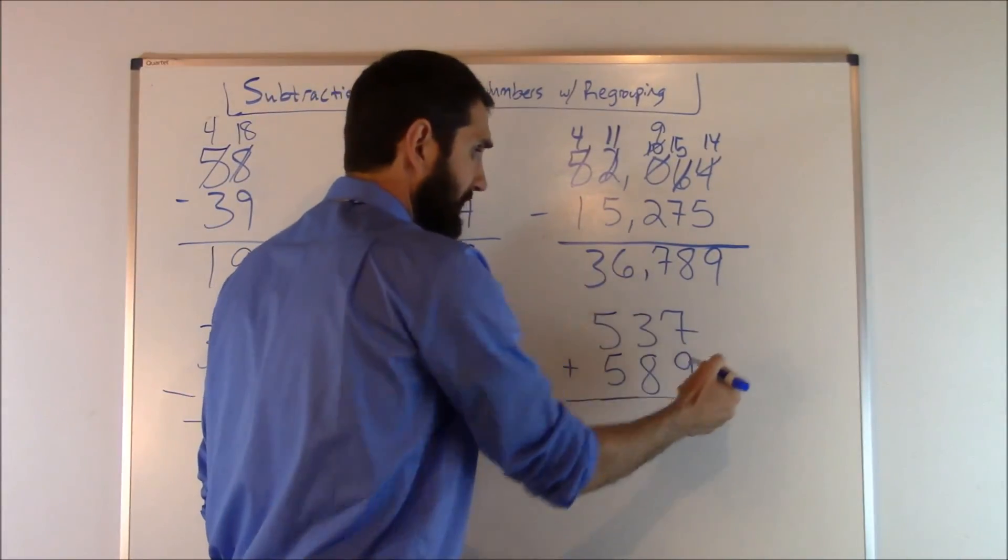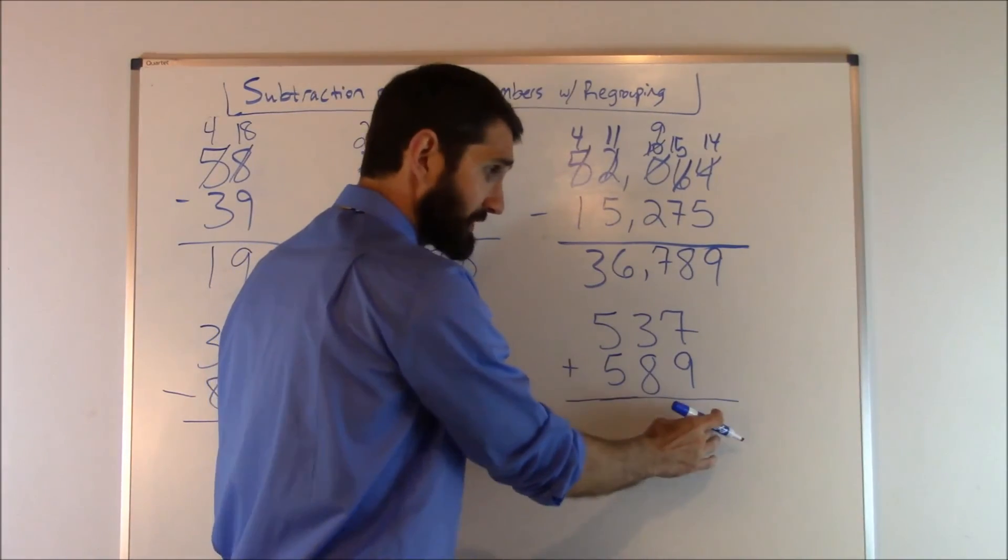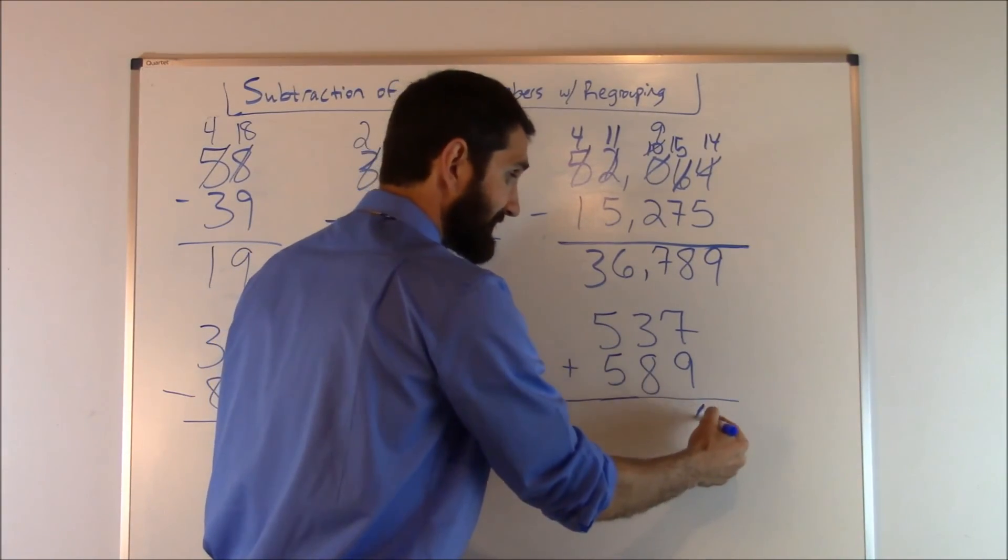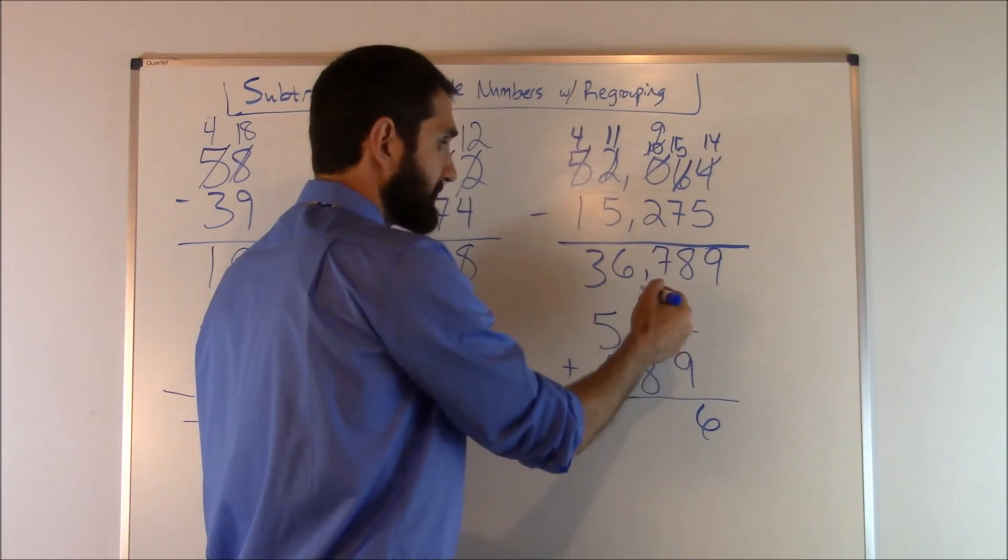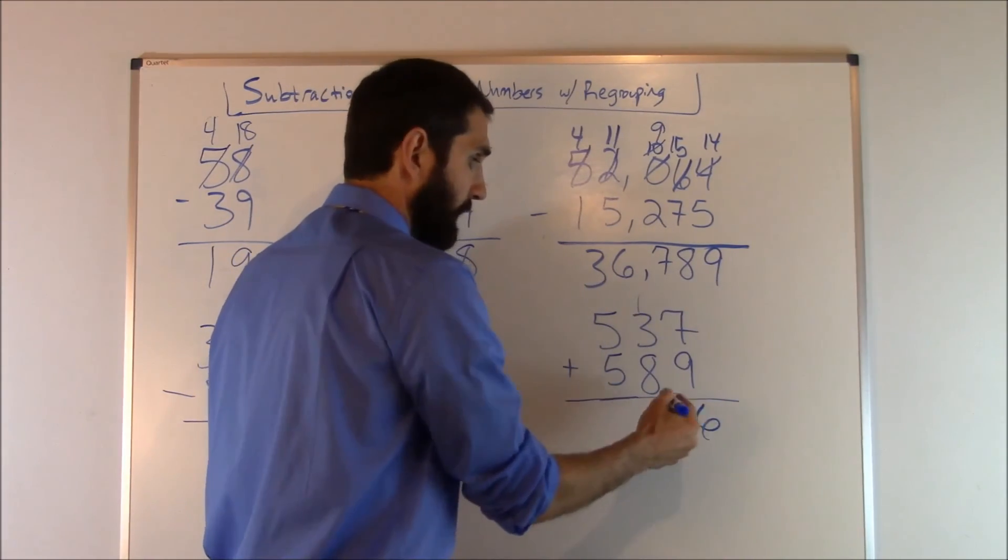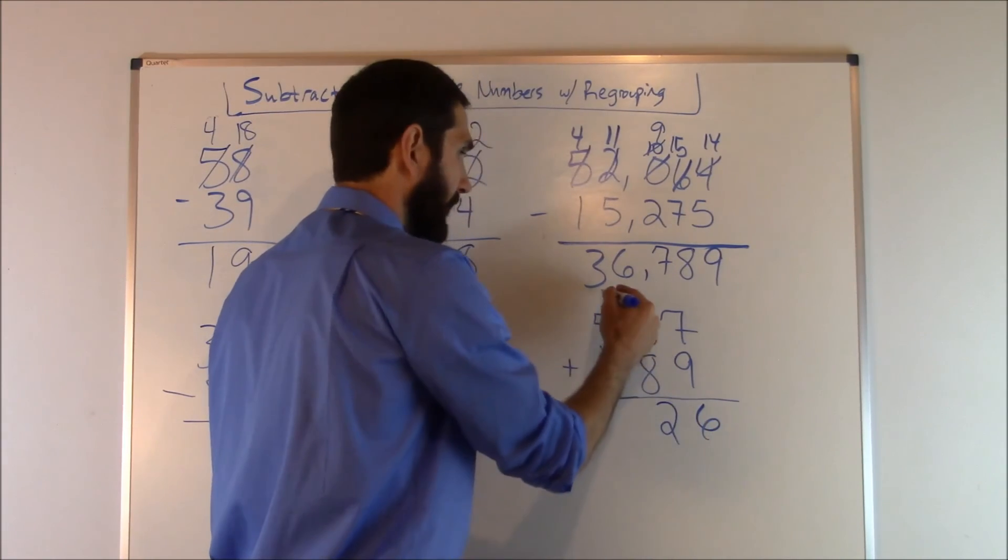So seven plus nine is going to give us 16. We don't put the whole 16 here. We only put the six and we carry the one. So eight plus three plus one, that's going to give us 12. We don't put the whole 12. We just put the two and we carry the one.